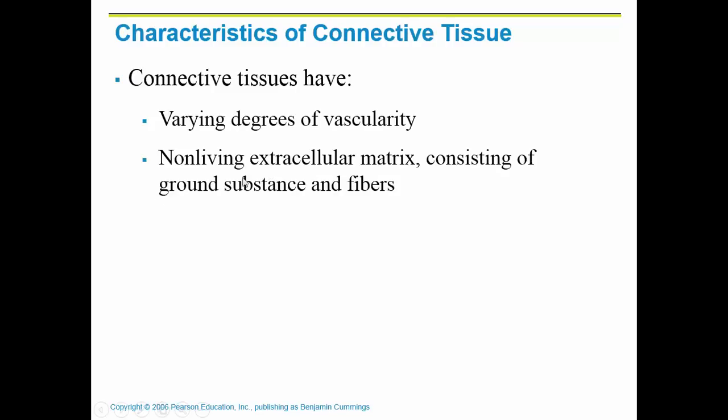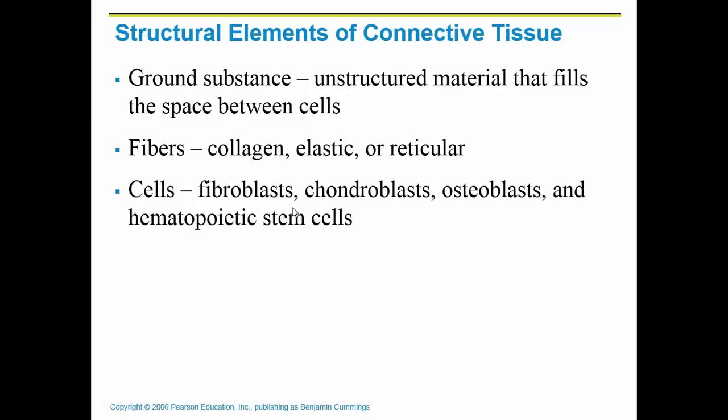Matrix is made up of two things: ground substance and fibers. Ground substance is basically the filler — it's non-living and not made up of organic substances, just kind of the background. Then the fibers — there are three types: collagen, elastic, or reticular. These fibers all have their own function.